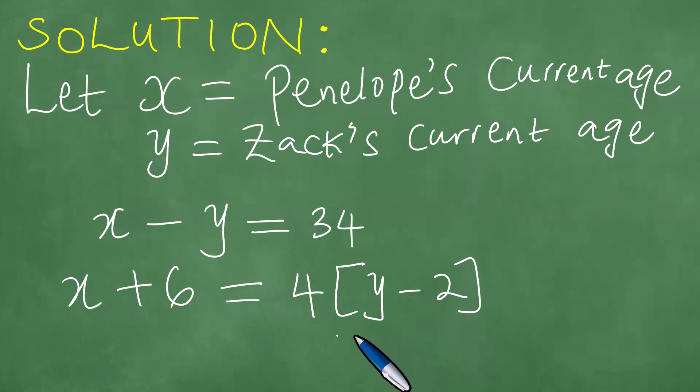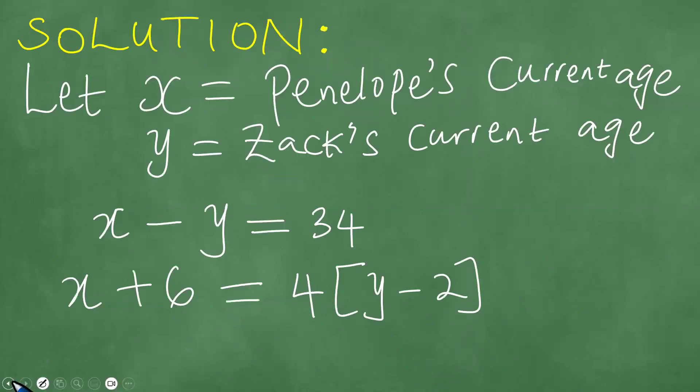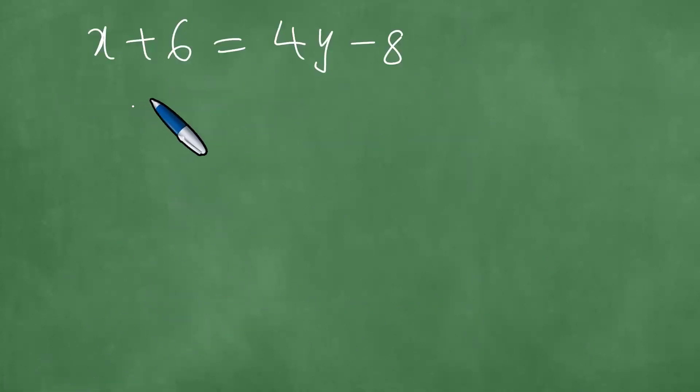From the first equation, let's just manipulate these here. So this is X plus six, which is equal to four Y minus eight. So this is going to be four times Y, which is four Y minus eight. The first equation is going to be X equals, so simplifying this, it gives us X equals four Y minus, bringing the eight across is going to give us minus 14.